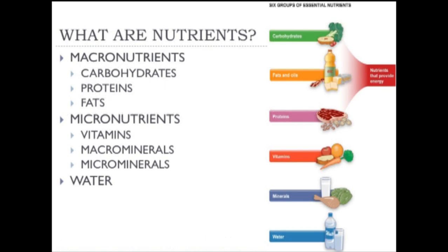Nutrients include macronutrients, micronutrients, and water. The macronutrients — carbohydrates, proteins, and fat — are the energy sources of the diet; we get calories from carbs, proteins, and fat. Micronutrients, on the other hand, are not energy-providing but are vital for proper biological functioning. Within micronutrients we have vitamins, macrominerals (required in fairly large quantities, usually milligram amounts), and microminerals (usually required in microgram amounts). Water is also considered a nutrient.